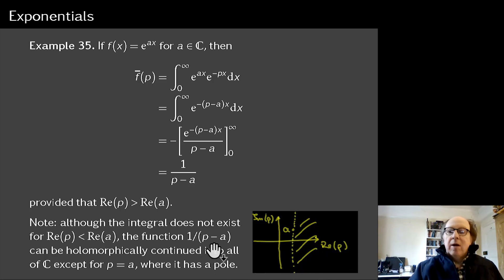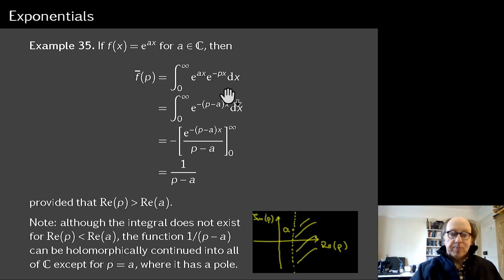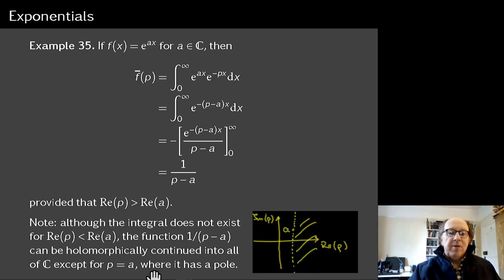Notice that the function 1/(p − a), as a holomorphic function of p, exists in the whole complex plane except at p = a. This is the process of holomorphic continuation or analytic continuation. The integral only exists for Re(p) > Re(a), but 1/(p − a) exists everywhere. Because they agree on a dense set wherever either is holomorphic — that's the identity theorem at work — this function has a pole at p = a, which we'll see coming into action later on.